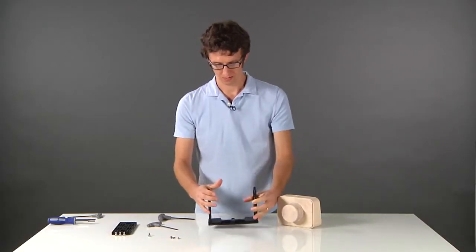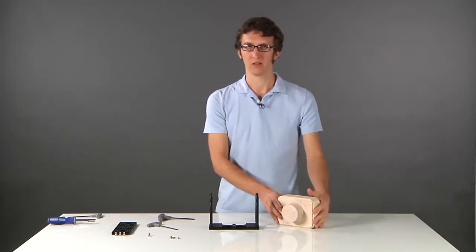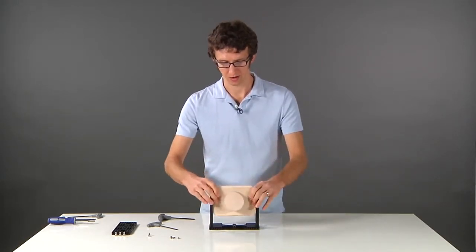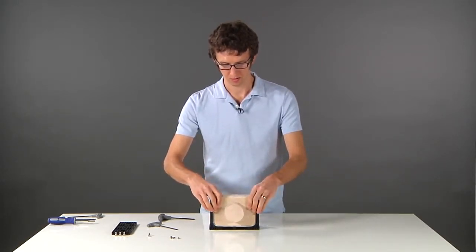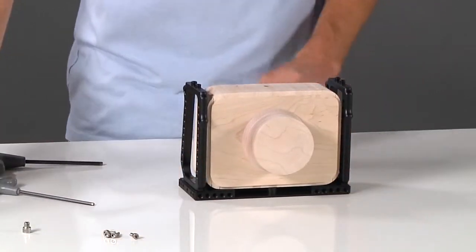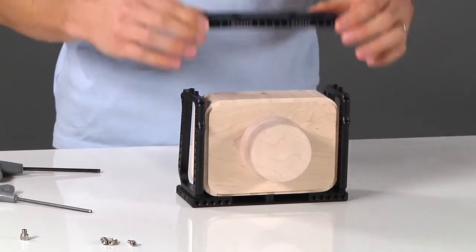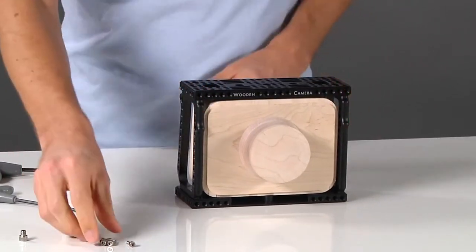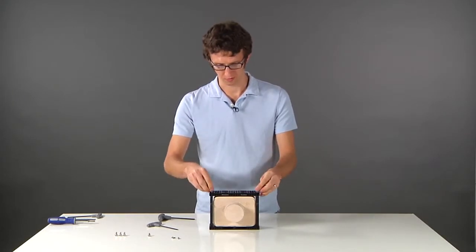Now once they're tight, take your Blackmagic camera and align the locating pin so that it slides into the corresponding hole. Then, you can take your top plate and insert the four corresponding screws.